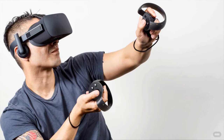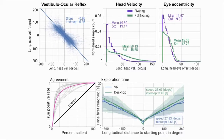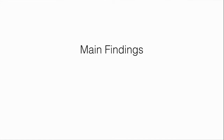Knowing where people look in these virtual environments is useful for several areas of active research. To further our understanding of viewing behavior and saliency in VR, we recorded almost 2,000 head and gaze trajectories from users exploring 22 stereoscopic scenes in three different viewing conditions. This dataset will be made publicly available. Detail analysis of the dataset can be found in the paper and the supplemental material.